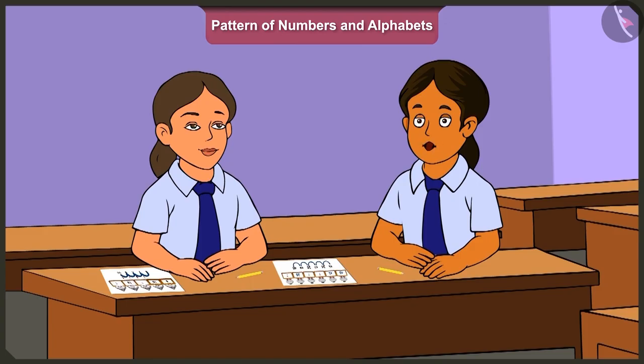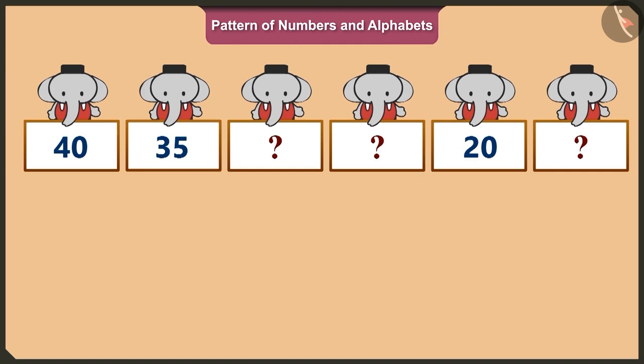Yes, we can solve this puzzle by subtracting five from each term. Hmm, on subtracting five from thirty-five, we will get thirty. And on subtracting five from thirty, we will get twenty-five.